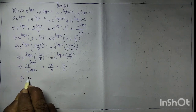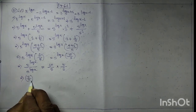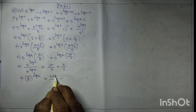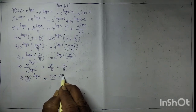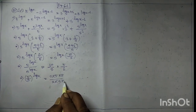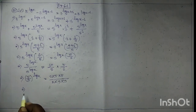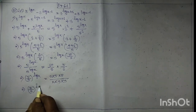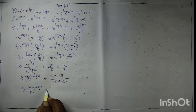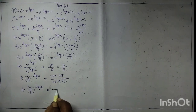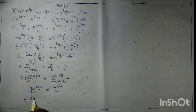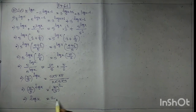Implies 5 by 3 to the power log x, equal to 2 into 5 into 5 by 2 into 3 into 3. Implies 5 by 3 to the power log x, is equal to 5 squared by 3 squared, which is 5 by 3 to the power 2. Implies log x equal to 2.